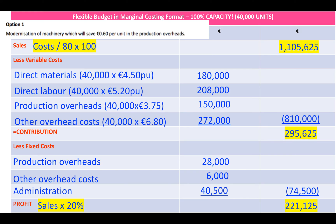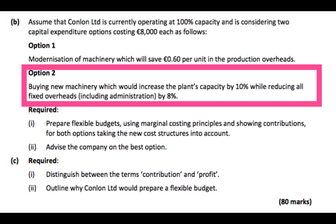We also work out the sales, contribution, and profit for Option 1. Remember profit is 20% of sales, and capacity at 100% is 40,000 units. For Option two, buying new machinery would increase the plant's capacity by 10%, so from 40,000 to 44,000 units, while reducing all fixed overheads, including administration, by 8%. So we multiply all fixed overheads by 92%.